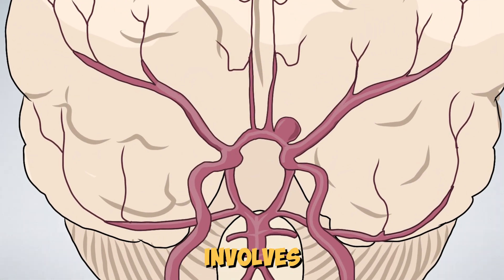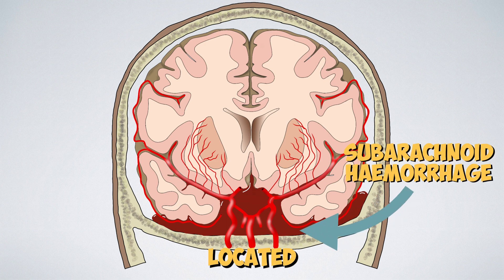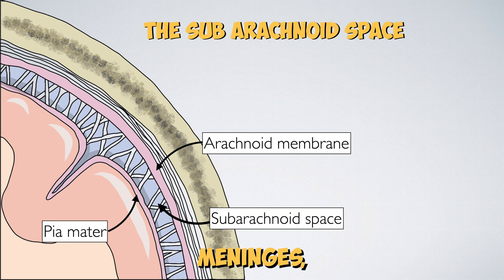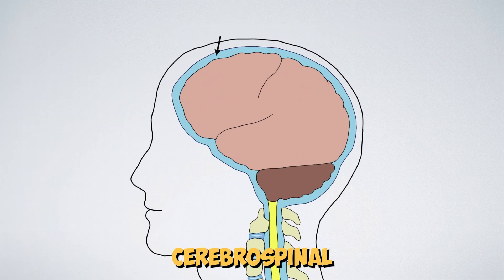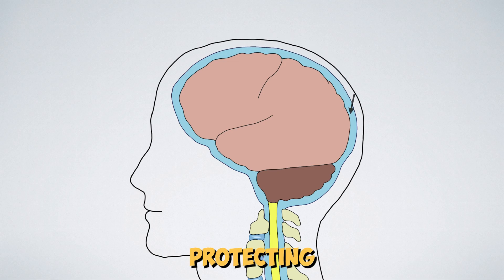Subarachnoid haemorrhage involves acute bleeding into the subarachnoid space. This is located between the arachnoid membrane and the pia mater, which are two of the meninges — the protective layers that cover the brain and spinal cord. The space contains cerebrospinal fluid, a clear colourless liquid that acts as a cushion protecting the brain and spinal cord from trauma.